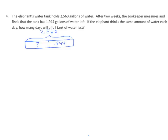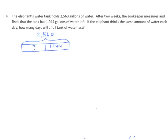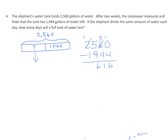We're going to do some subtraction: 2,560 minus 1,944. That's going to tell us how many gallons are consumed in two weeks. We need to do a little regrouping — this becomes a 6, a 1, regroup again. We get 15 minus 9 is 6. So this is 616. We draw another arrow, and my hole represented there is 616.